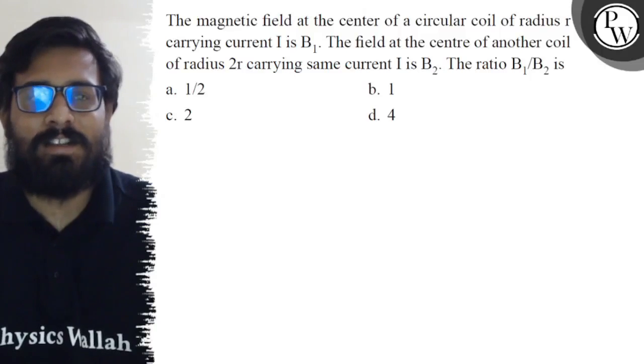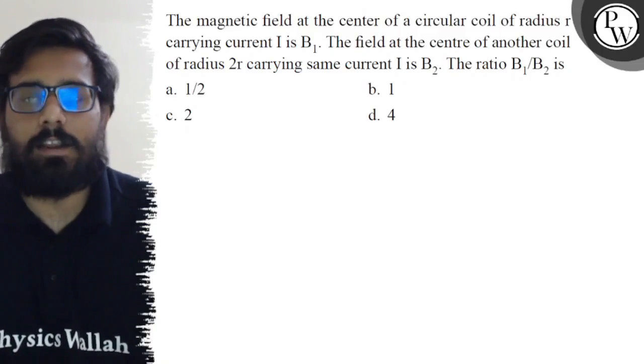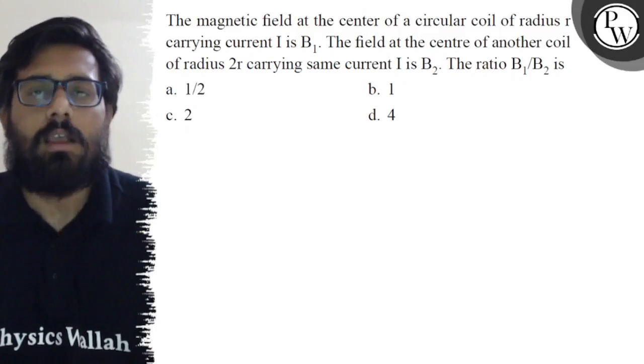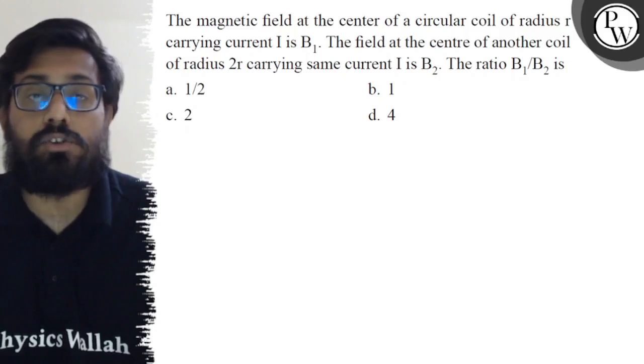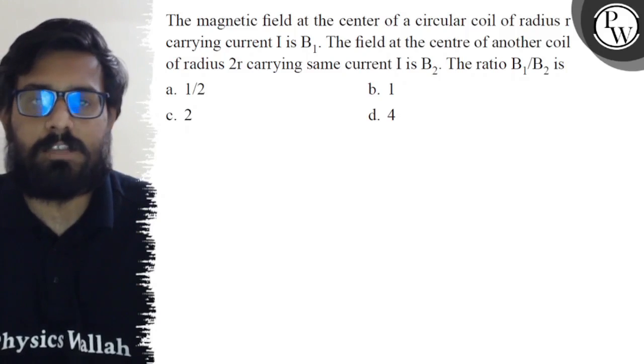Hello bachos, so let's see the question. The magnetic field at the center of a circular coil of radius r carrying current I is B₁. The field at the center of another coil of radius 2r carrying the same current I is B₂. The ratio of B₁ and B₂ is: first option is 1:2